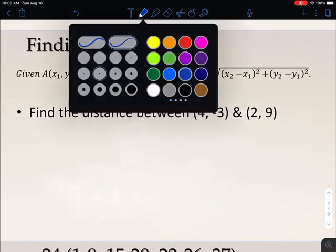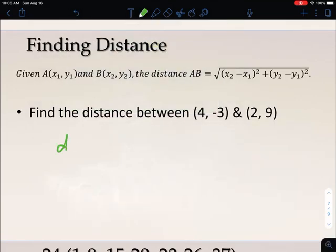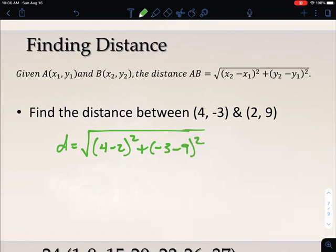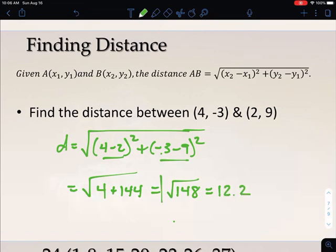One more quick example then, using the formula. If I want the distance between the two points, I'm going to subtract the X's. Again, order doesn't matter. So 4 minus 2 squared, plus subtract the Y's, negative 3 minus 9 squared. Now I start to simplify. We did the subtraction first. 4 minus 2 is 2, squared is 4. Negative 3 minus 9 is negative 12, squared is 144. And then if I add those together, I get 148. So I have the square root of 148, which is not a perfect square. So I could plug it in my calculator and get the decimal answer of 12.2. Either of these two answers would be acceptable at this time.